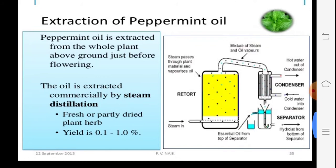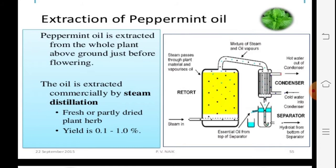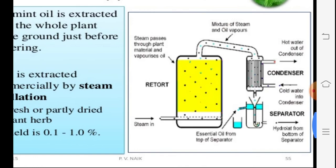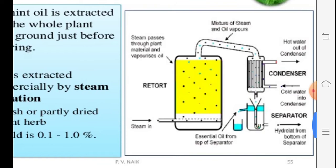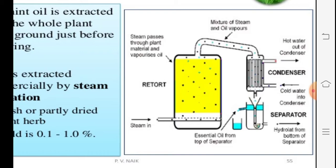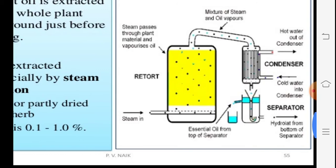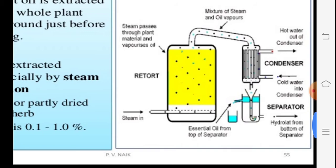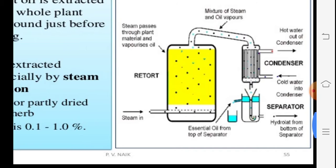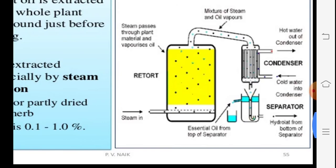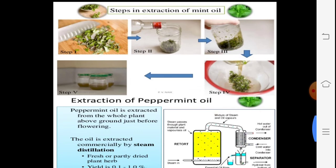For extraction, peppermint oil is extracted by steam distillation. In the steam distillation apparatus, a boiler generates steam, which passes through the plant material in a large retort. The steam carries oil vapors which are cooled in a condenser with hot water exhaust and cold water inlet. The oil is then separated by a separator. The essential oil — shown in blue — is collected in this way.